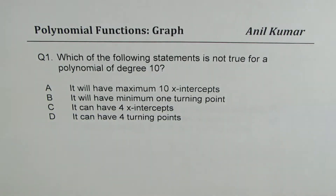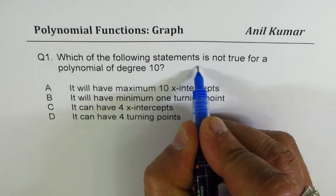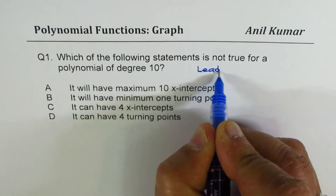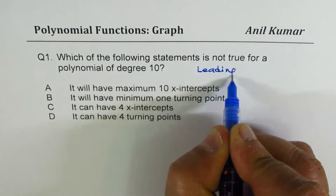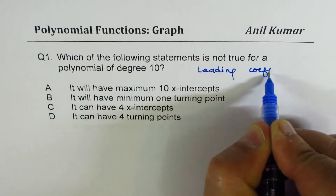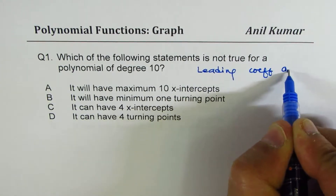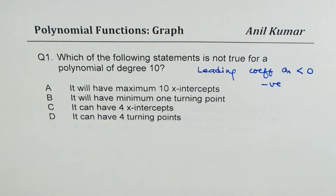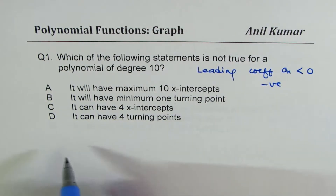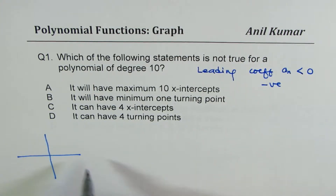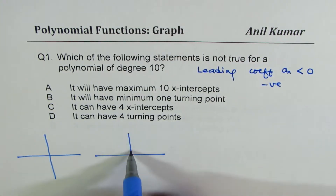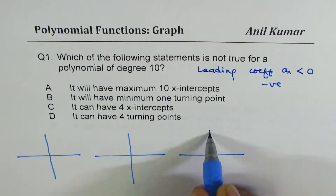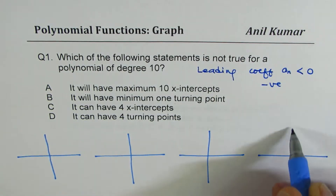So, to solve this, let us assume that the leading coefficient is negative. Let's say leading coefficient a_n is less than 0 — that means it is negative. Based on this, I will actually show all types of possibilities. There are 4 different cases, so let's try to take them one by one.